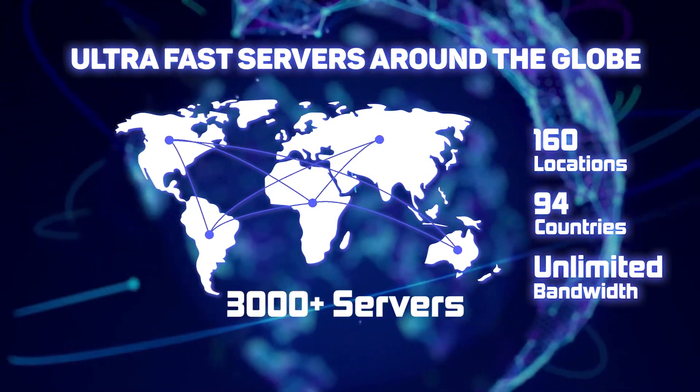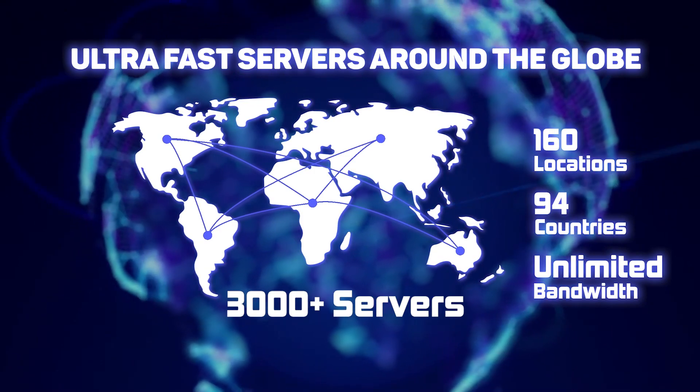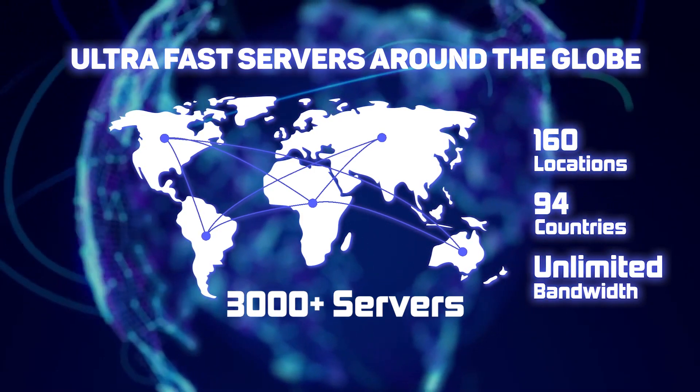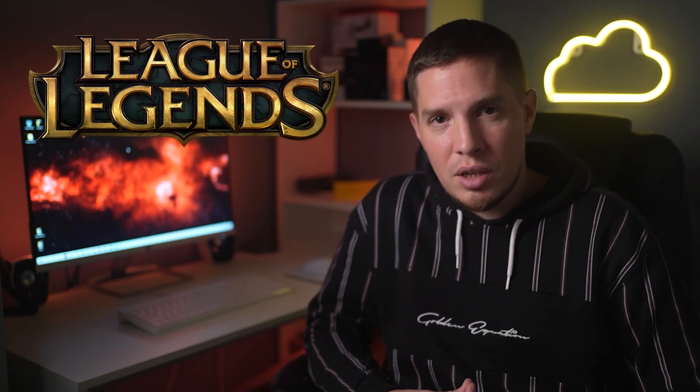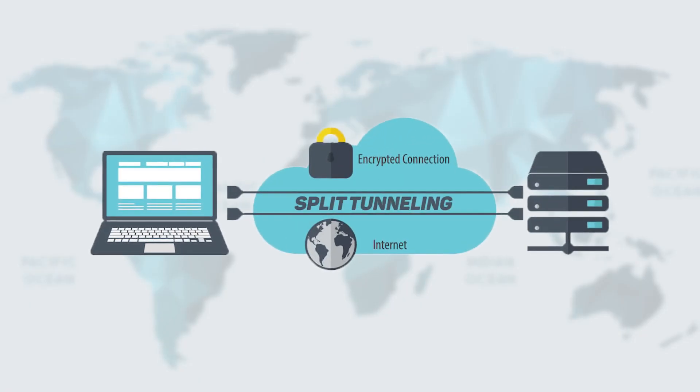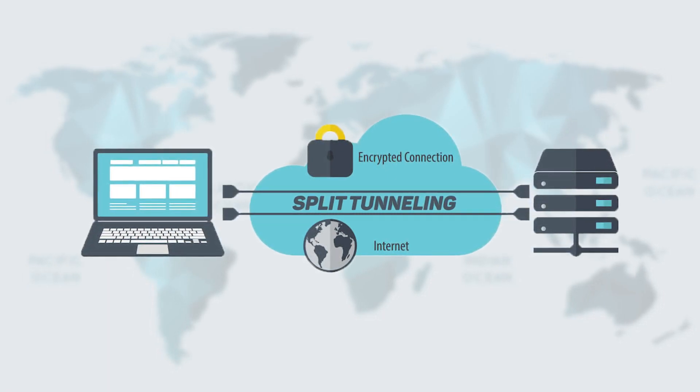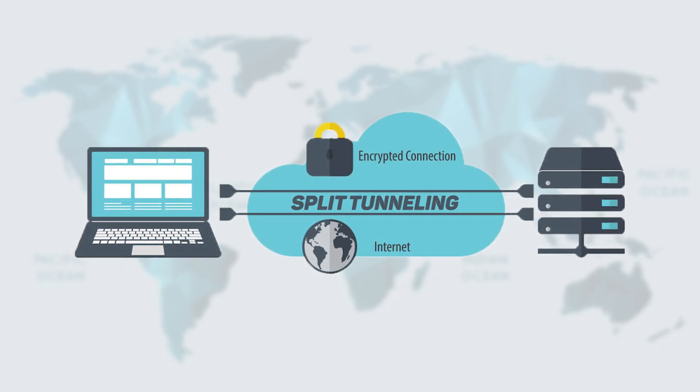With ExpressVPN you can access a network of over 3,000 servers in 90 countries, putting an almost limitless amount of restricted content at your fingertips. Thanks to unlimited bandwidth, there are no limits on your internet use — I played several hours of League of Legends without a single dropped connection, and by blocking bandwidth throttling, ExpressVPN ensured no lag in my gameplay. I often use the split tunneling feature during multiplayer sessions, which lets me route gaming traffic through a US server while still checking social media with my regular local IP address.